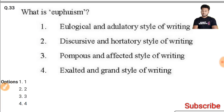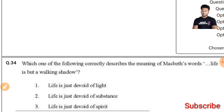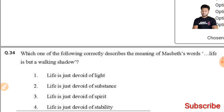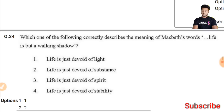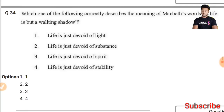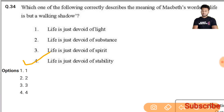Question 34: Which one of the following correctly describes the meaning of Macbeth's words 'Life is but a walking shadow'? The right answer is that life is just devoid of stability.